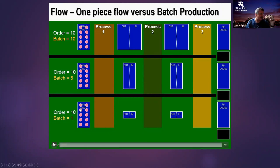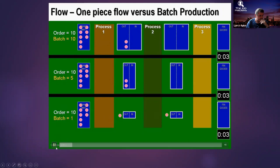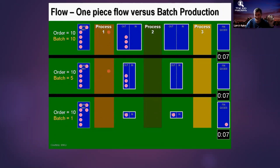I'll play the animation and stop at certain points. The minimum batch size is one — called one-piece flow. If I have one-piece flow, looking at the bottom of the animation, I already have something I can sell. I do not yet have anything I can sell in the top two conditions.